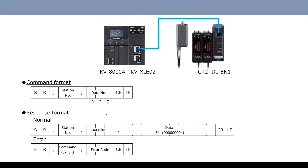There are two formats for receiving data: a normal case and an abnormal case. In a normal case, the data specified by the data number of this command — the PV value — is returned. In an abnormal case, the command in which an error occurred and the error code are returned. We will set it so that both normal and abnormal case data can be received.